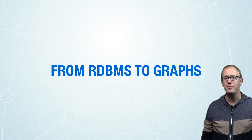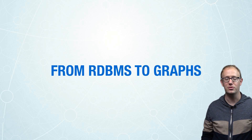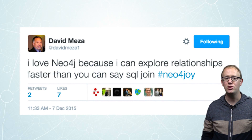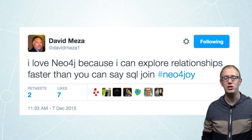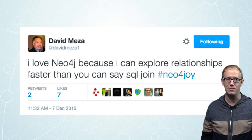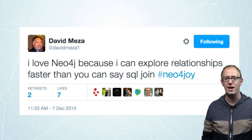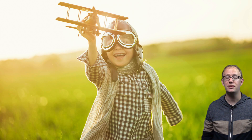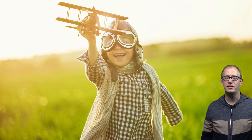Let's talk about how to move from relational to graph. Here is a quote from David Meza, chief knowledge architect at NASA — an organization full of smart people. He says: 'I love Neo4j because I can explore relationships faster than you can say SQL join.' You're going to see some handwritten drawings, tables, and handwritten text throughout this section.